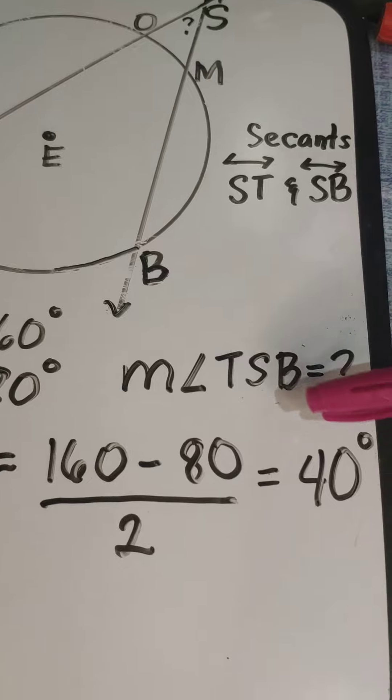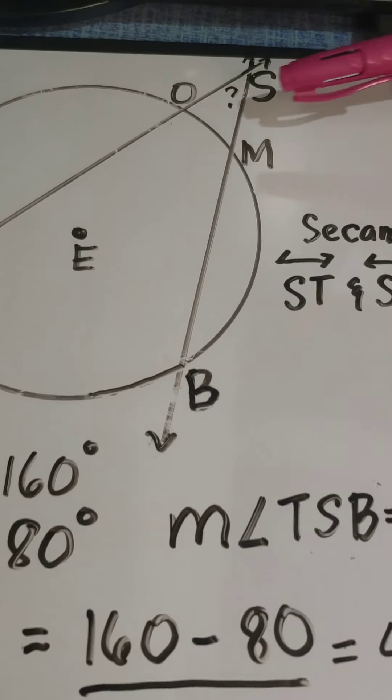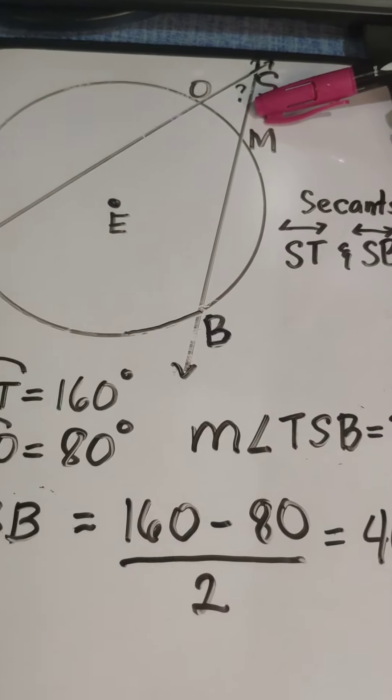Therefore, the measure of angle TSB is 40 degrees, or the measure of the angle outside the circle is 40 degrees.